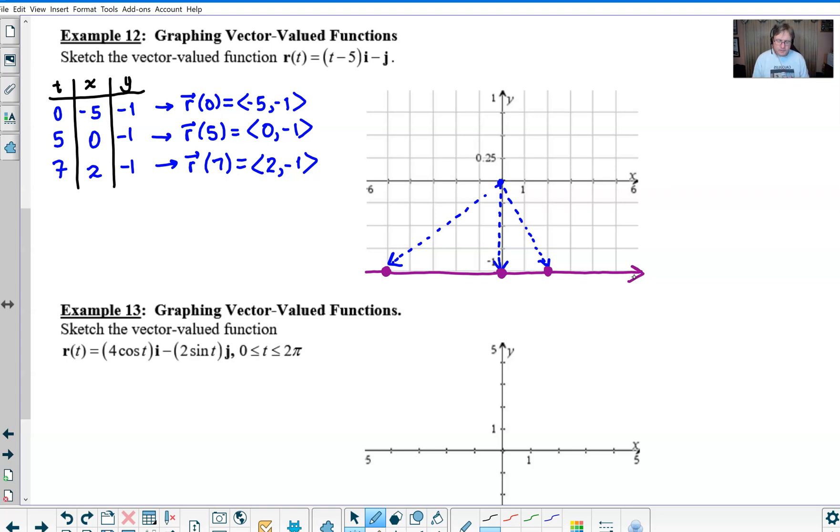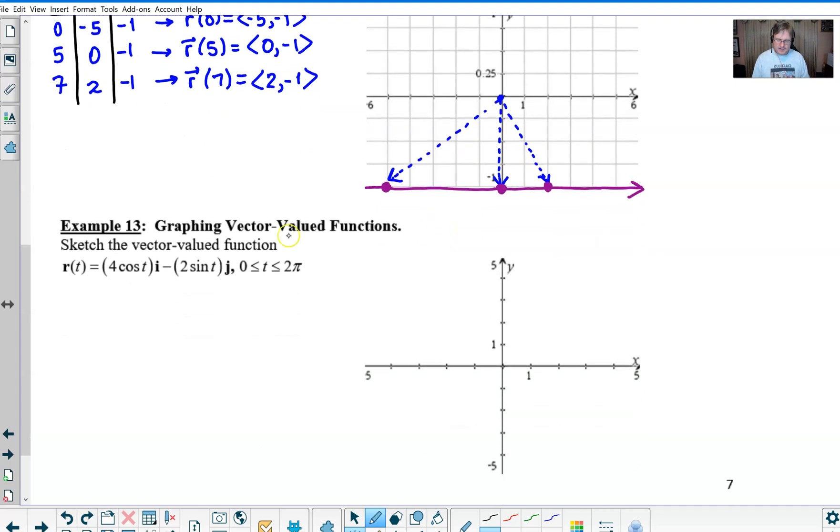Let's do the same kind of thing with example 13. We want to graph it, however it's a little bit trickier to set this up by using a table of values because we're going to have to be digging through all of these different trig ratios and nobody wants to do that. So there's a bit of a trick that you can do with a problem like this.